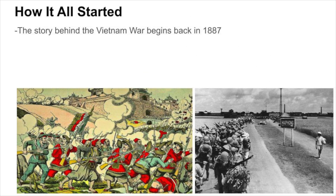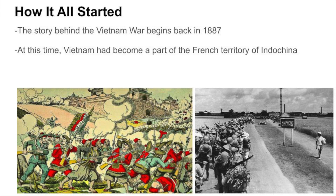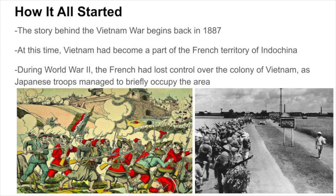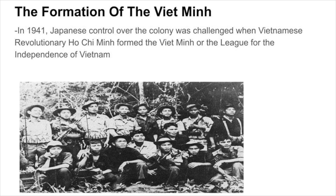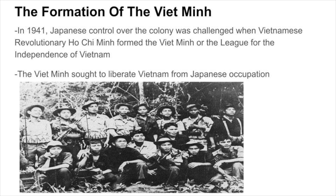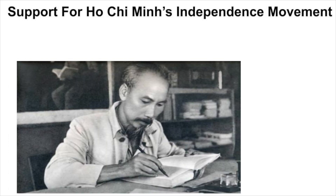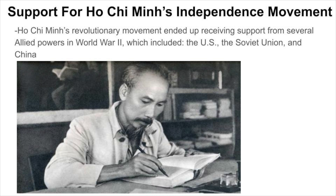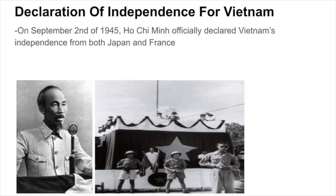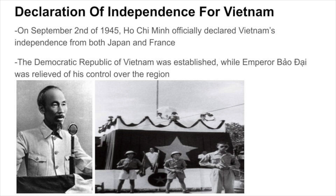The story behind the Vietnam War begins back in 1887. At this time, Vietnam had become a part of the French territory of Indochina. During World War II, the French lost control over the colony as Japanese troops briefly occupied the area. In 1941, Japanese control was challenged when Vietnamese revolutionary Ho Chi Minh formed the Viet Minh, or the League for the Independence of Vietnam, which sought to liberate Vietnam from Japanese occupation. On September 2nd of 1945, Ho Chi Minh officially declared Vietnam's independence, establishing the Democratic Republic of Vietnam.